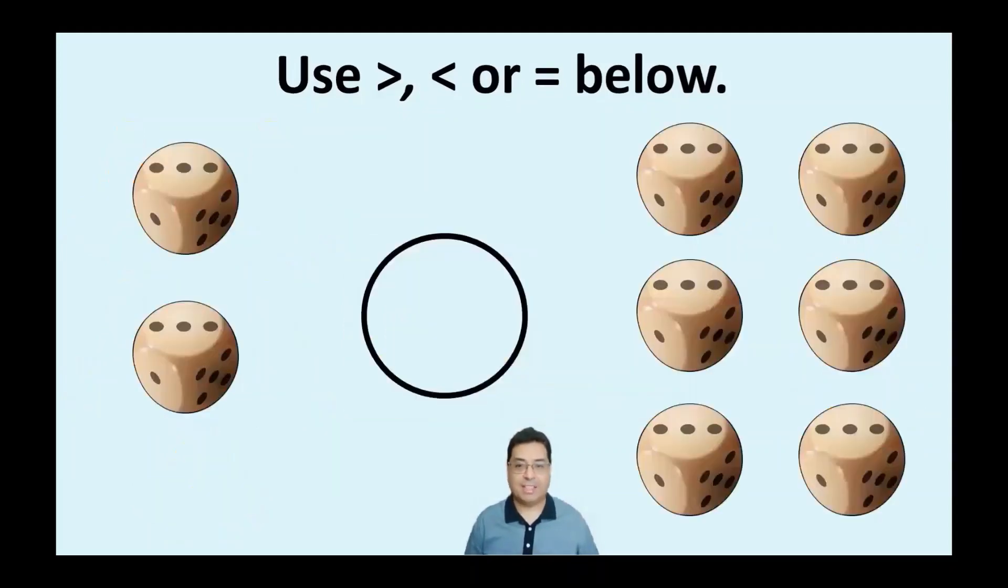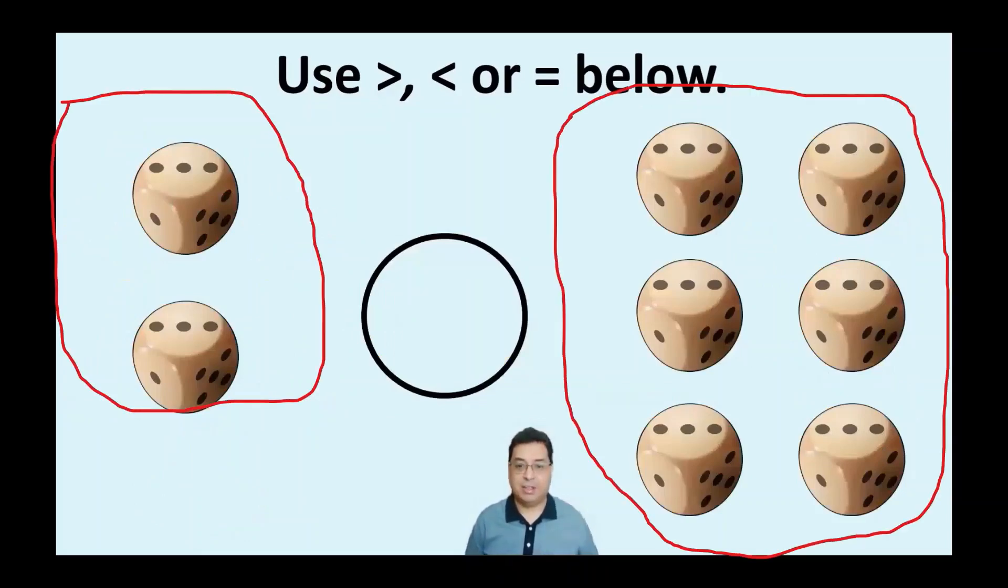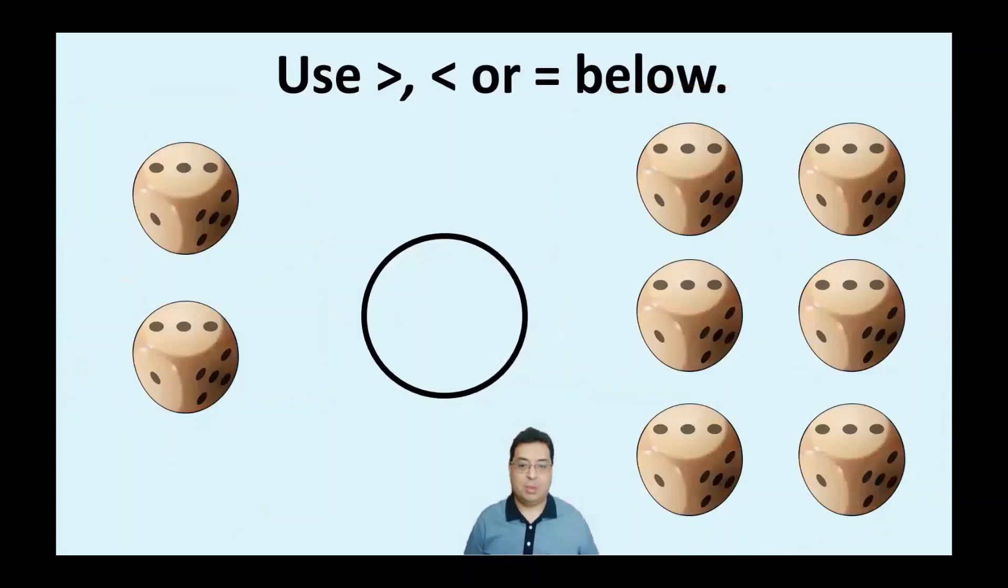Looking at this dice here, we can see that there's two here and six here. So which one has more, which one has the greater amount or in this case, which one has less?